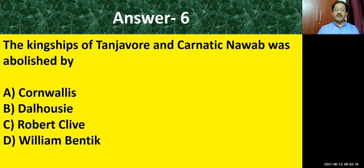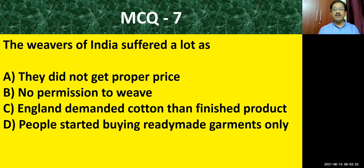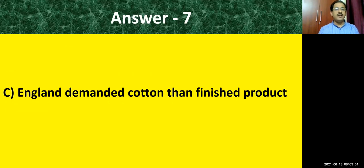Question number six: the kingship of Tanjavur and Carnatic Nawab was abolished — by whom? Options: Cornwallis, Dalhousie, Robert Clive, William Bentinck. The correct answer is Dalhousie. Question number seven: the weavers of India suffered a lot. Options: they did not get proper price; England demanded cotton rather than finished product; people started buying ready-made garments only. The correct answer is: England demanded cotton rather than the finished product.